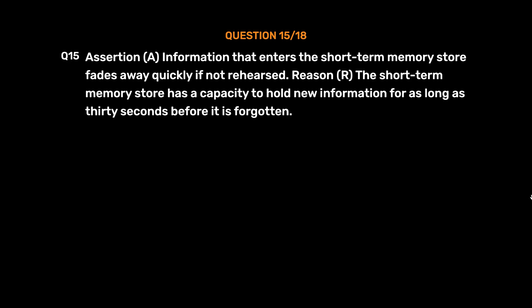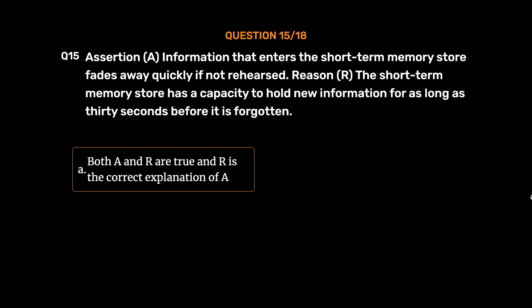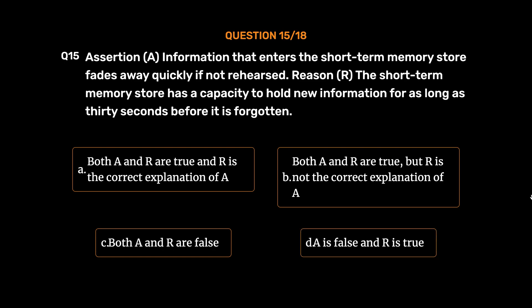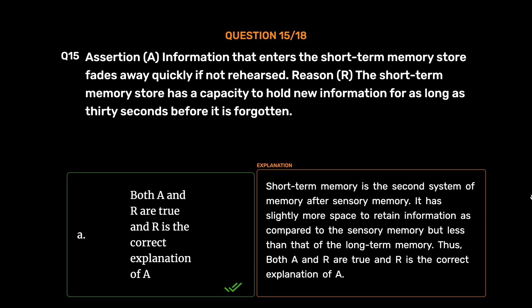Question number 15. Assertion A: Information that enters the short-term memory store fades away quickly if not rehearsed. Reason R: The short-term memory store has a capacity to hold new information for as long as 30 seconds before it is forgotten. Option A: Both A and R are true and R is the correct explanation of A. Option B: Both A and R are true but R is not the correct explanation of A. Option C: Both A and R are false. Option D: A is false and R is true. The correct answer is Option A. Short-term memory is the second system of memory after sensory memory, and both A and R are true with R being the correct explanation of A.